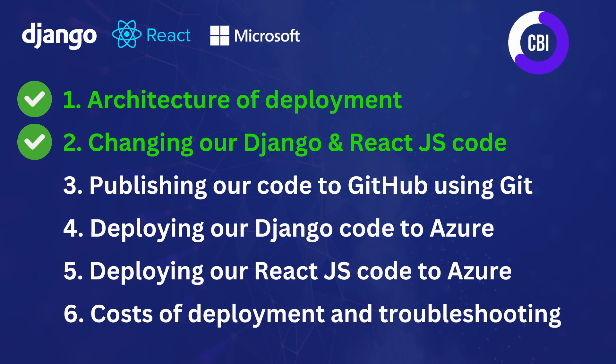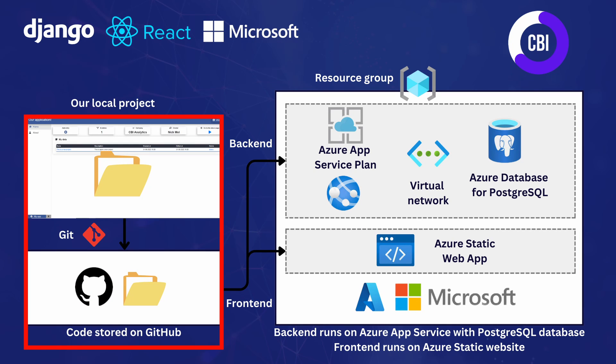In the first video we discussed the architecture of the deployment, and in the previous video we changed our Django backend code so it is ready for deployment on Azure. In this video we're going to continue and deploy our source code to GitHub using Git. This covers the full process on the left of our architecture, going from our local project code to storing it in an online repository so we can connect it to the Microsoft Azure portal.